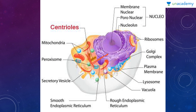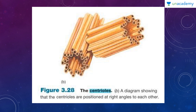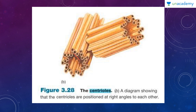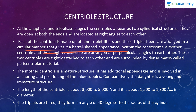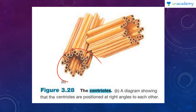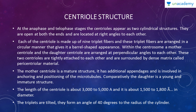Looking at the diagram of an animal cell, you can see the centrioles present perpendicular to each other. These are nine structures of microtubules present in triplets, with two bundles perpendicular to each other. Regarding the structure: at anaphase and telophase, the centriole appears as two cylindrical structures open at both ends and located at right angles to each other. Each centriole is made up of nine triplet fibers arranged in a circular manner, giving it a barrel-shaped appearance.